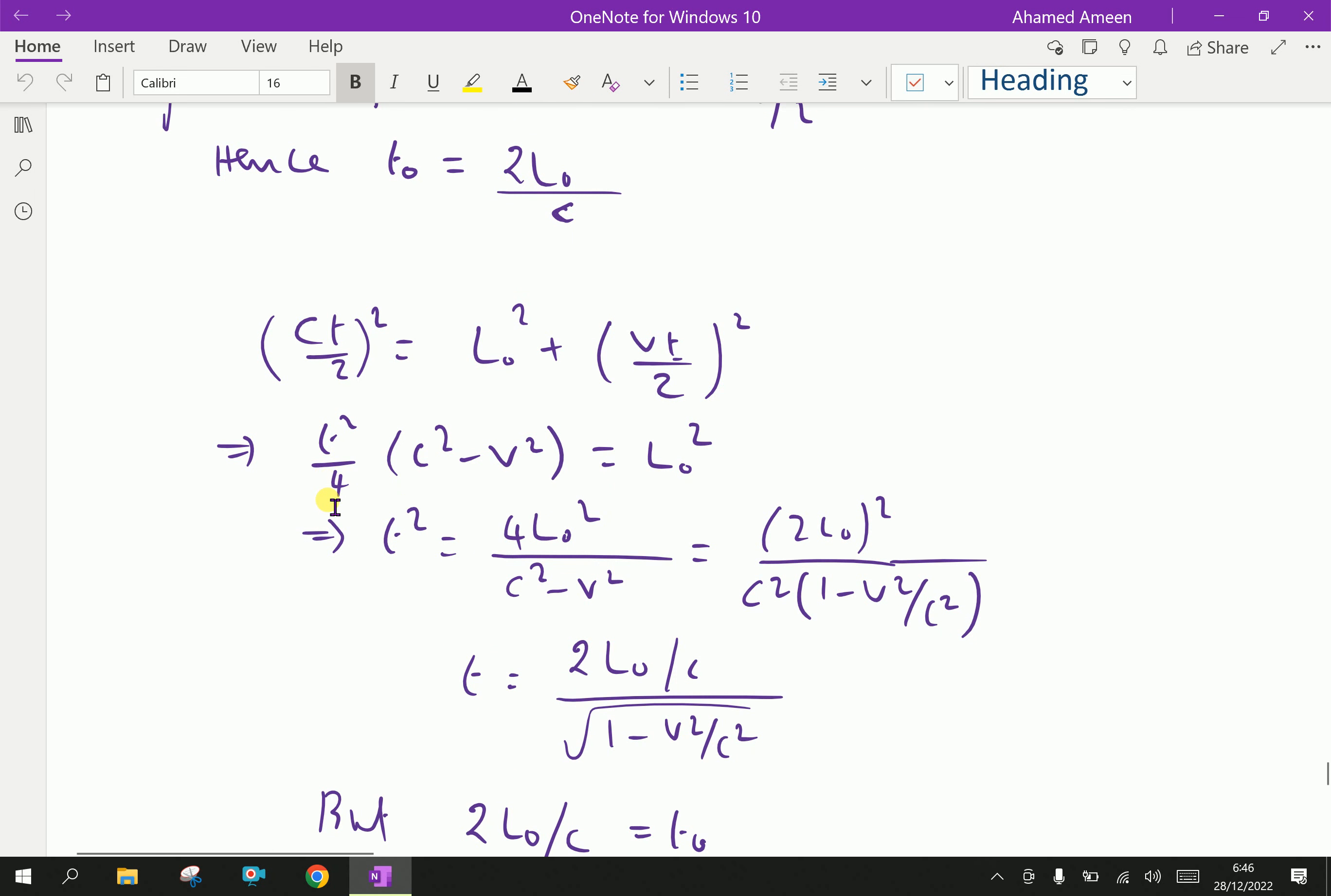From this, here, by cross multiplying, we will get T square equal to 4 L zero square over C square minus V square. That is, by cross multiplying. Here, then, 4 L zero square, we can write as 2 L zero whole square by, here, C square. And suppose C square taken out is 1 minus V square by C square, here.